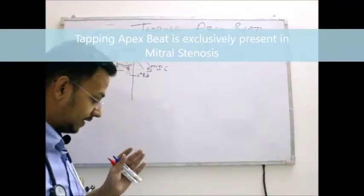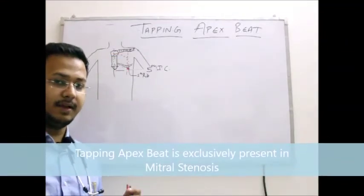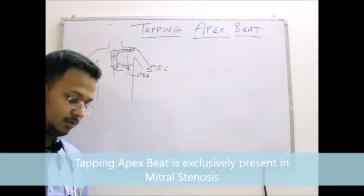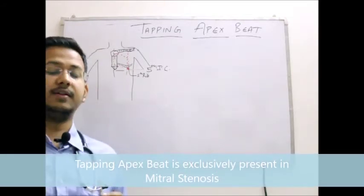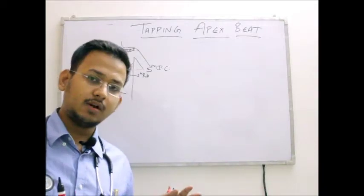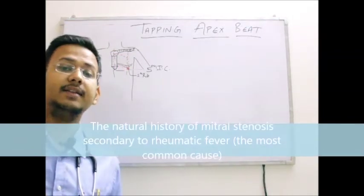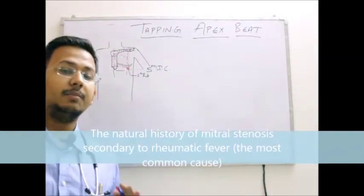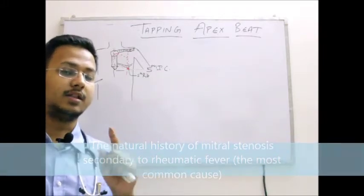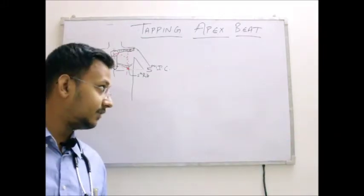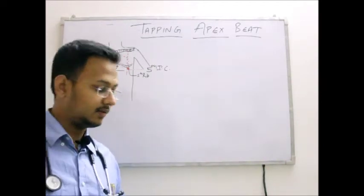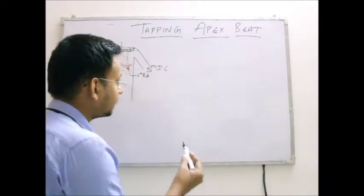Now, what is the tapping apex beat? Before that, we must know a disease: mitral stenosis. Mitral stenosis is a consequence of rheumatic heart disease. Mitral stenosis, until and unless proven otherwise, is always caused by rheumatic heart disease. Let us discuss what actually happens in mitral stenosis.